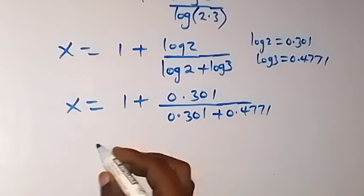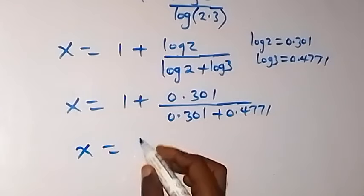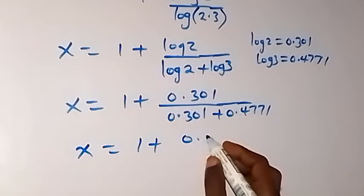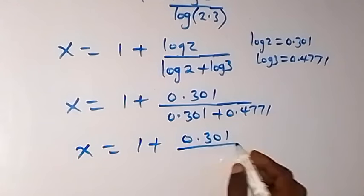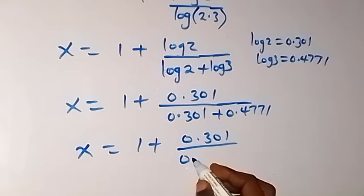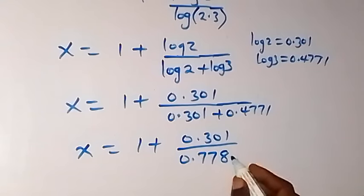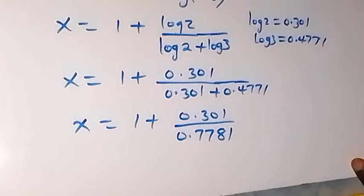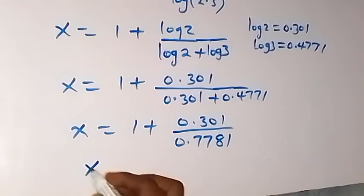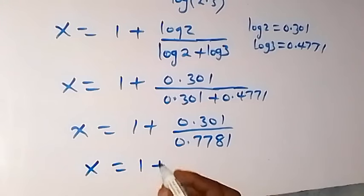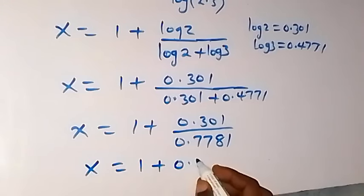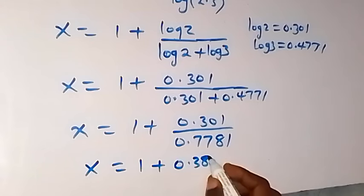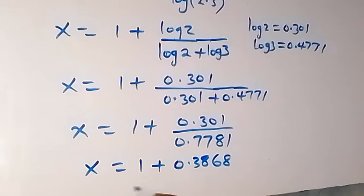Solving this, x equals 1 plus 0.301 over 0.7781. Dividing, we get x equals 1 plus 0.3868.